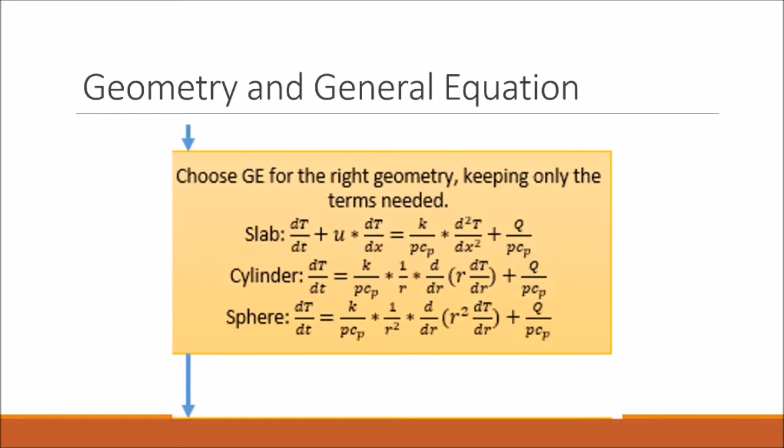Now we need to determine what general equation and geometry we need to use to solve this problem. We're told to represent the brain as a hemisphere, so the sphere general equation seems like the obvious choice. Now we can get rid of some terms in our equation. Because we're at steady state, this time term drops to zero.